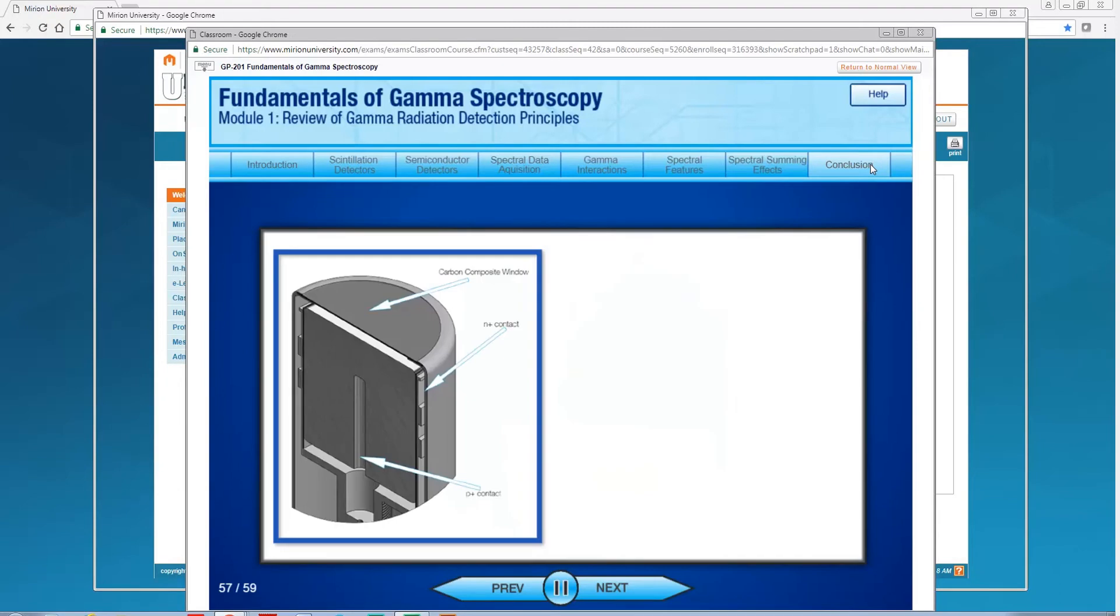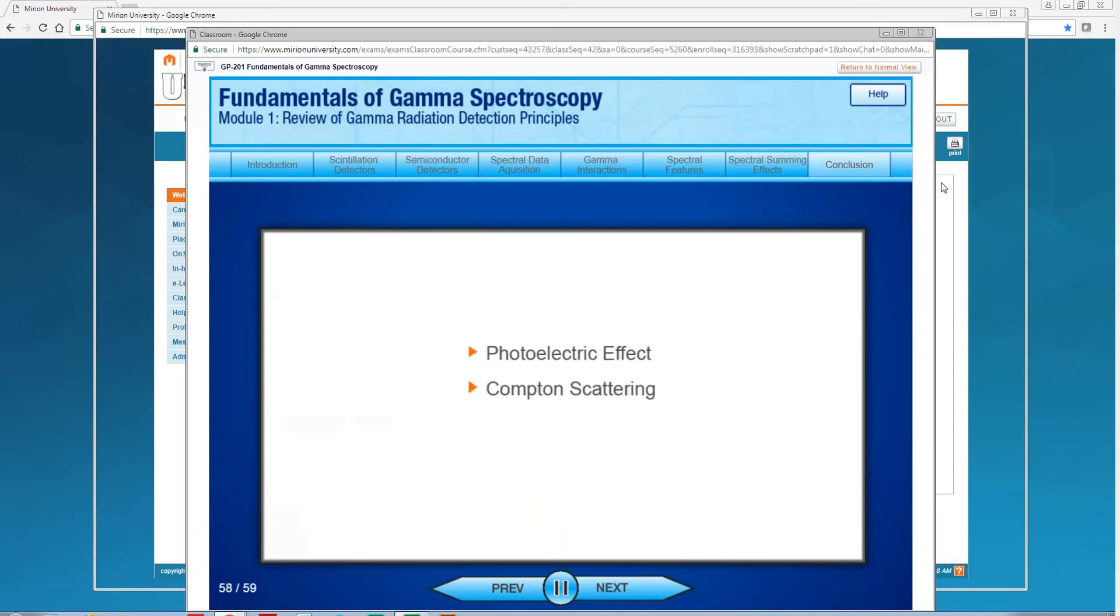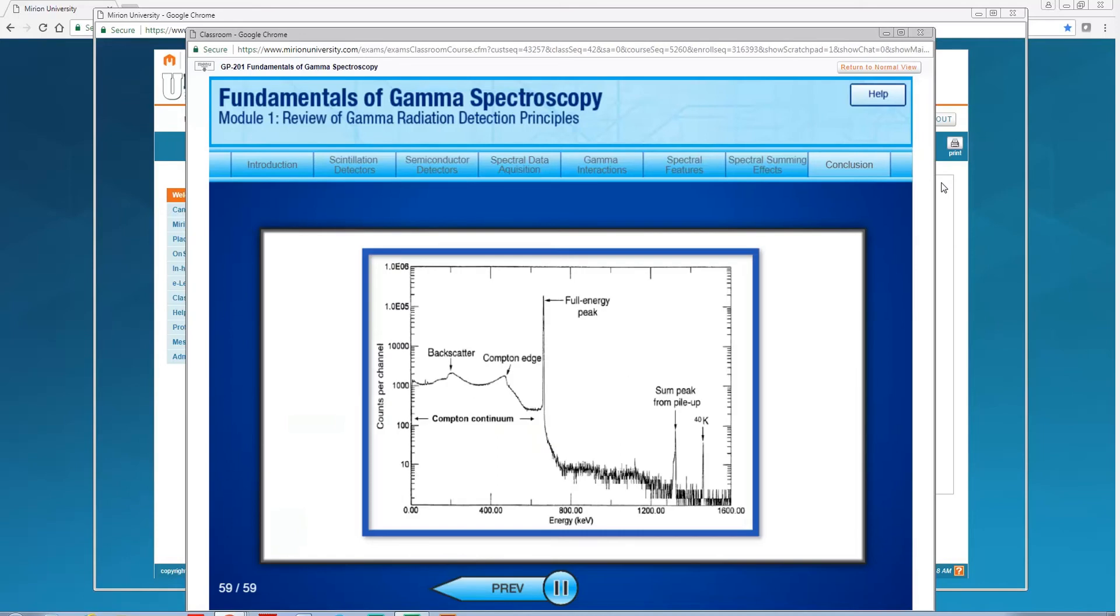In this training module we reviewed some basic radiation detection principles including scintillation and semiconductor detectors commonly used for gamma spectroscopy measurements, photoelectric effect, Compton scattering, pair production events that can occur when gamma radiation interacts with matter, and spectral data acquisition.